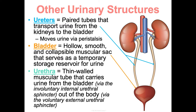The urethra is a thin-walled muscular tube that carries urine from the bladder via an involuntary internal urethral sphincter made of smooth muscle, then out of the body via the voluntary external urethral sphincter made of skeletal muscle, so you can control when urine is released. The urethra is much longer in males than females because it travels through the penis. Females are much more likely to get urinary tract infections because their shorter urethra means bacteria doesn't have as far to travel to reach the bladder.